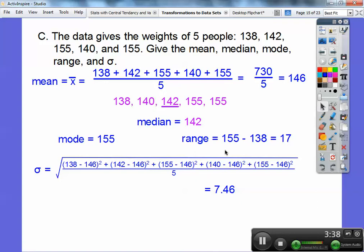Okay, and then standard deviation is each number minus the mean, minus this mean right here, squared. Okay, so 138 minus 146, and I did 142 minus 146 squared, 155 minus 146 squared, 140 minus 146 squared, and finally this one minus the mean squared. Add them all together, divide by five, and then square root all of that, and our standard deviation is 700, or I'm sorry, 7.46.